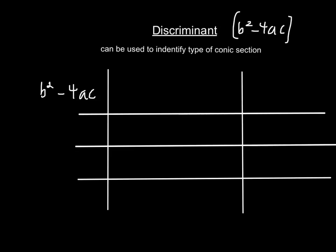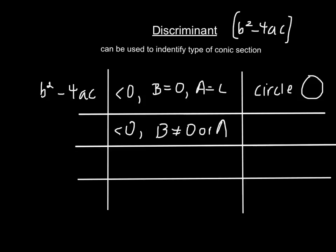Our discriminant, which is b squared minus 4ac, can be used to identify what type of conic section we have. If we plug in b squared minus 4ac into any of our equations and for that value we have something that is less than 0, and b is 0 or a equals c, we have a circle. If it's less than 0 but b is not 0 or a is not c, we have an ellipse.